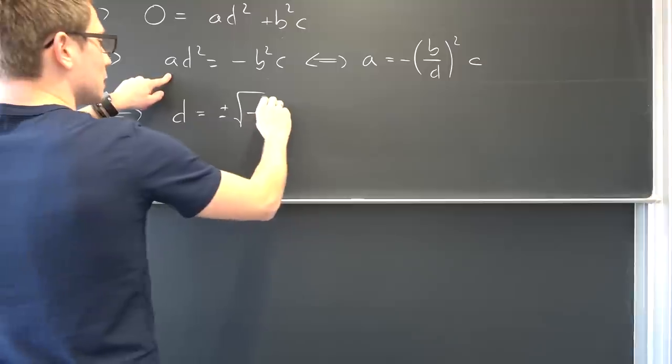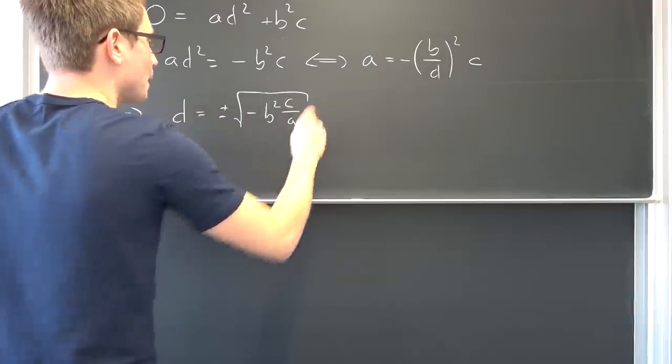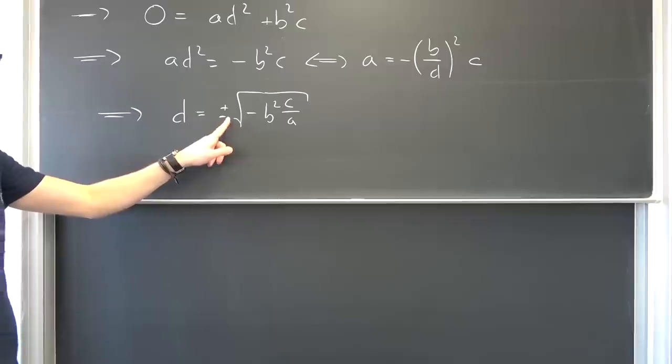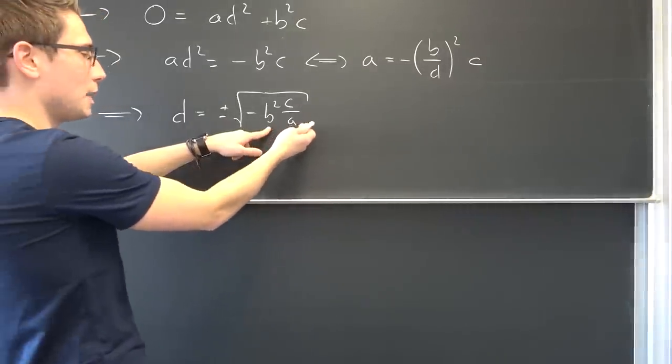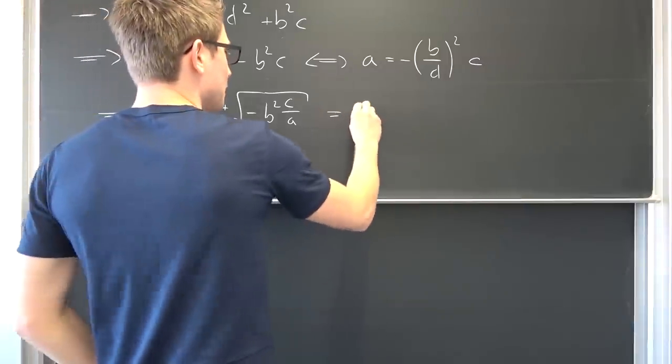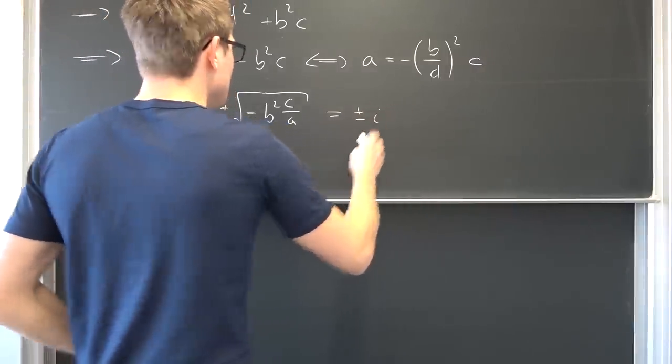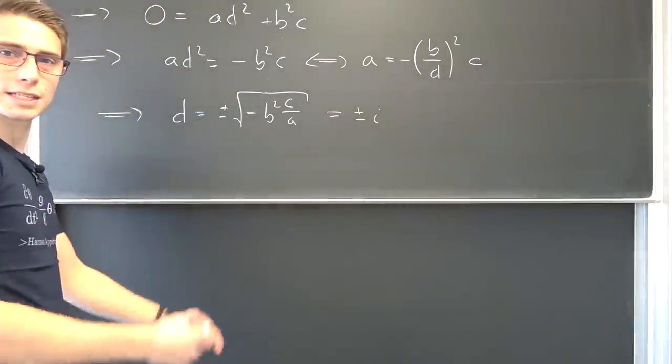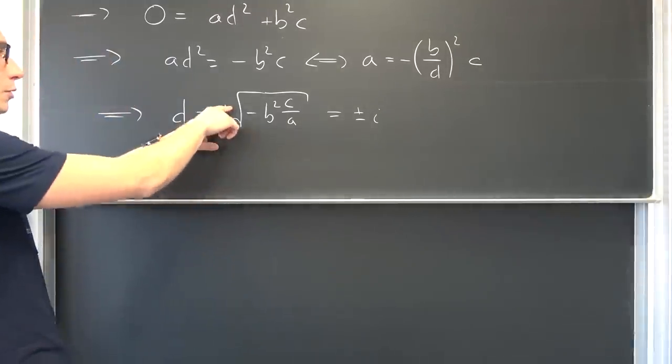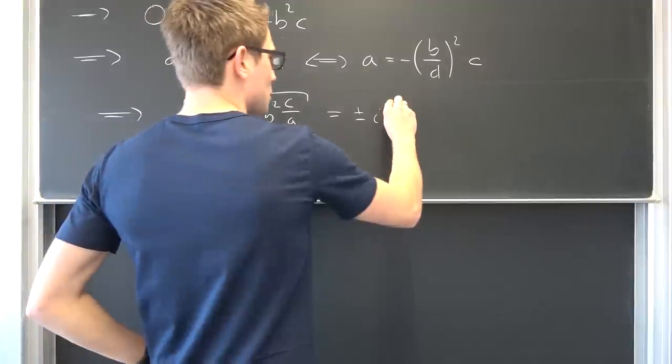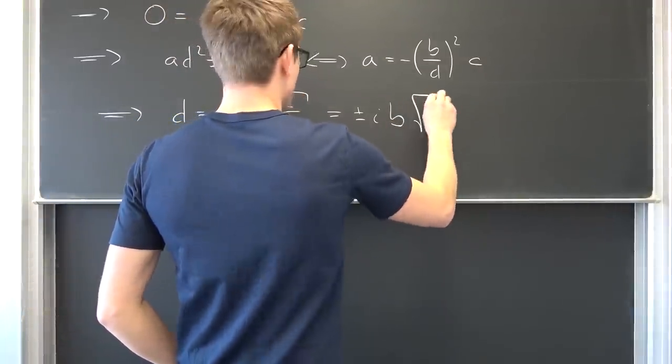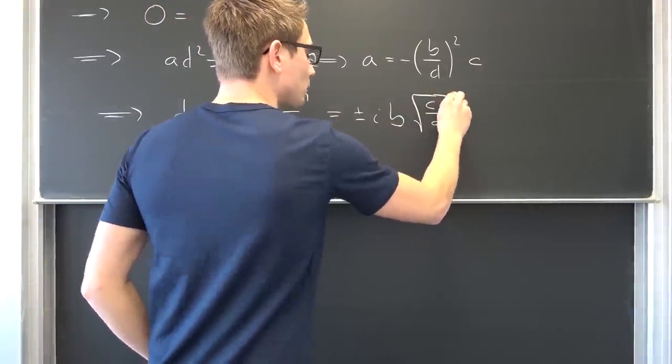That means d is nothing other than positive or negative square root of negative b squared c over a. Now we are going to take the square root of negative one. We can break this up. Meaning it's positive or negative i times the square root of b squared is the absolute value of b. But we are already taking the positive or negative branch into account. Meaning this is just going to be b times the square root of c over a.